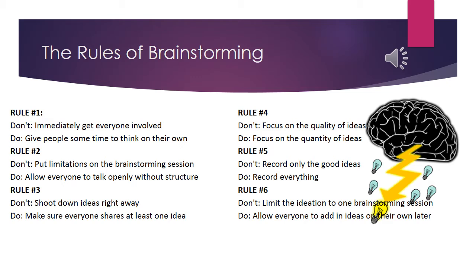The rules of brainstorming: Rule one — don't immediately get everyone involved all at once; let them talk one by one, and do give people some time to think on their own. Rule two — don't put limitations on the brainstorming session; the more ideas the better, and do allow everyone to talk openly without structure. Rule three — don't shoot down ideas right away and don't ignore ideas without consulting others; do make sure everyone shares at least one idea.